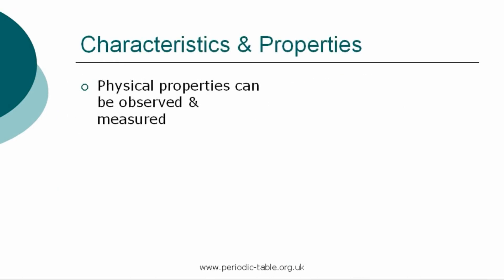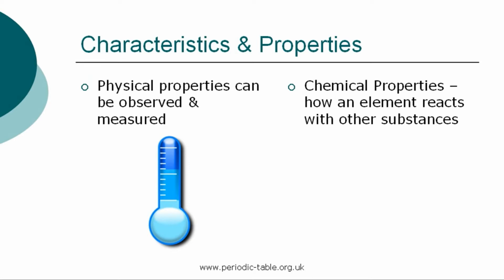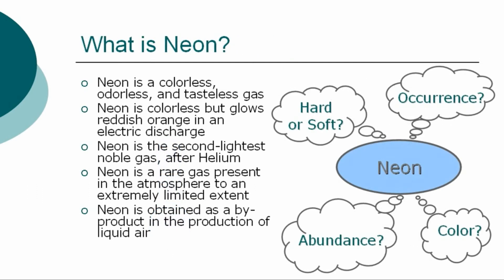Each element has physical properties that can be observed and measured, such as color, density, and odor. The chemical properties are the characteristics that determine how a substance will react with other substances, such as water or oxygen. In a general overview of the element, we can at first describe neon as a gas. It is a colorless, odorless, and tasteless gas. Although neon gas is colorless, it glows reddish orange in an electric discharge.